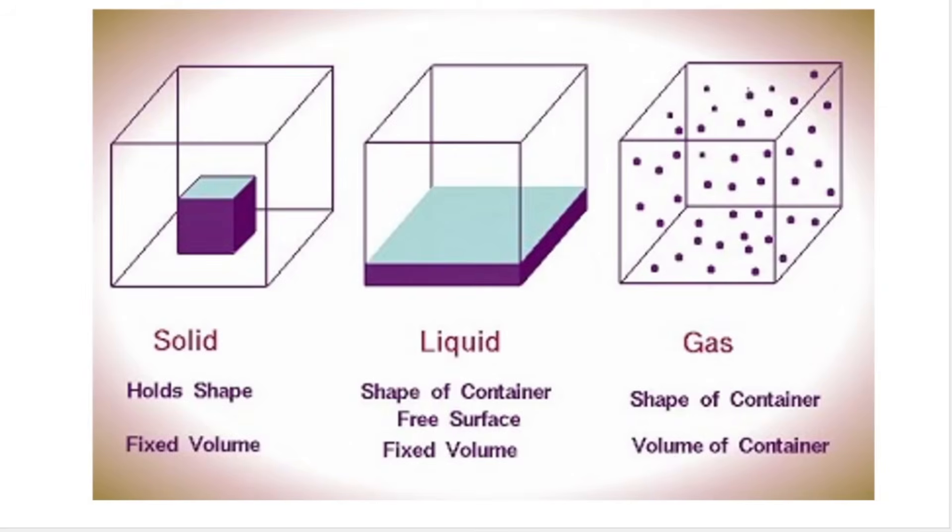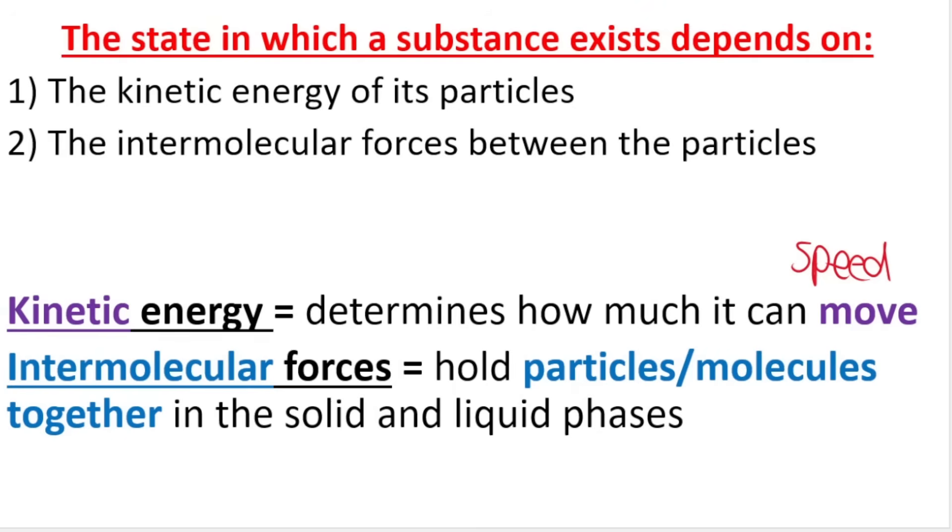Here's another illustration of a solid versus a liquid versus a gas. Now it's very important to understand that a state in which a substance exists, so whether it's liquid, solid, or gas, depends on the kinetic energy of its particles, and kinetic energy is related to speed. You will learn later on in grade 10, 11, and 12 that the formula for kinetic energy is half times mass times velocity squared. So you can see velocity as speed.